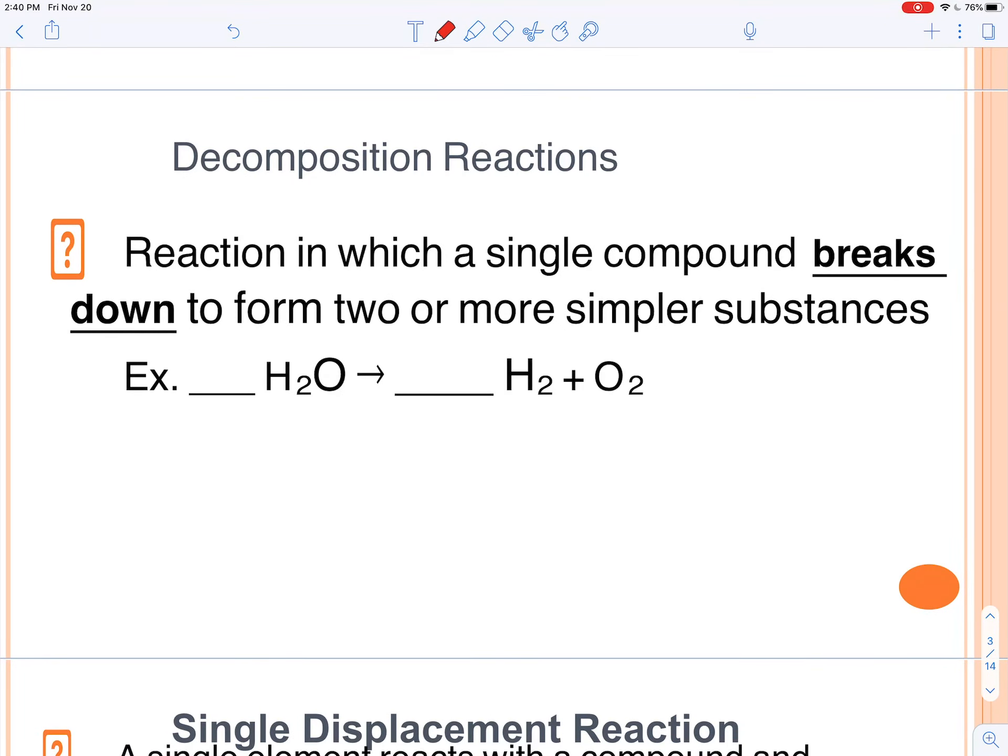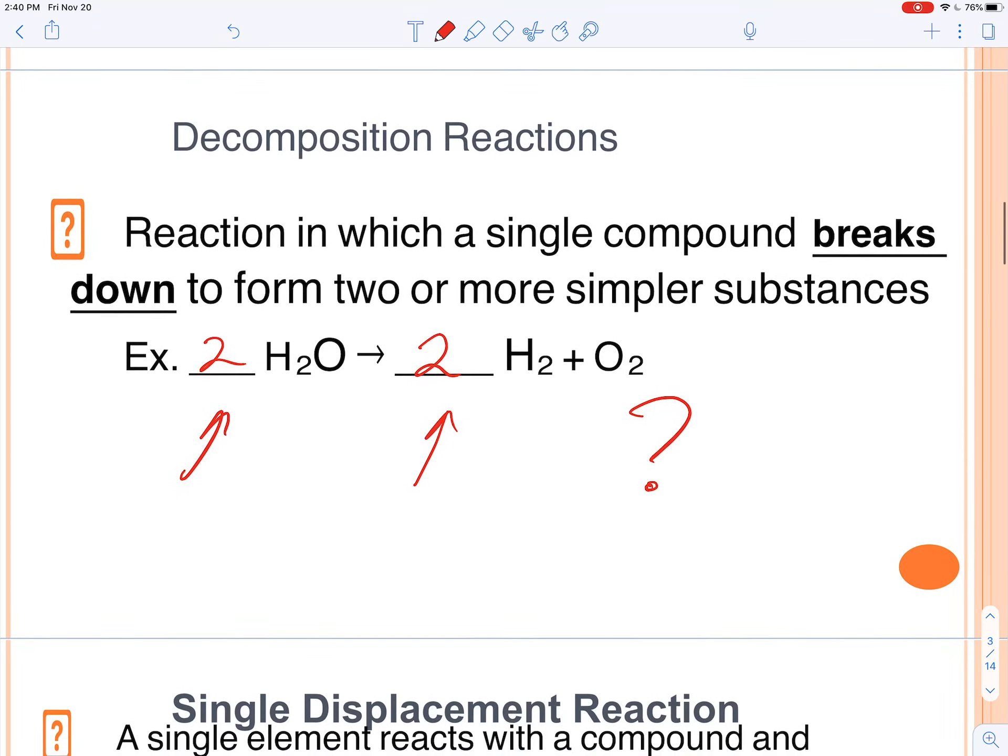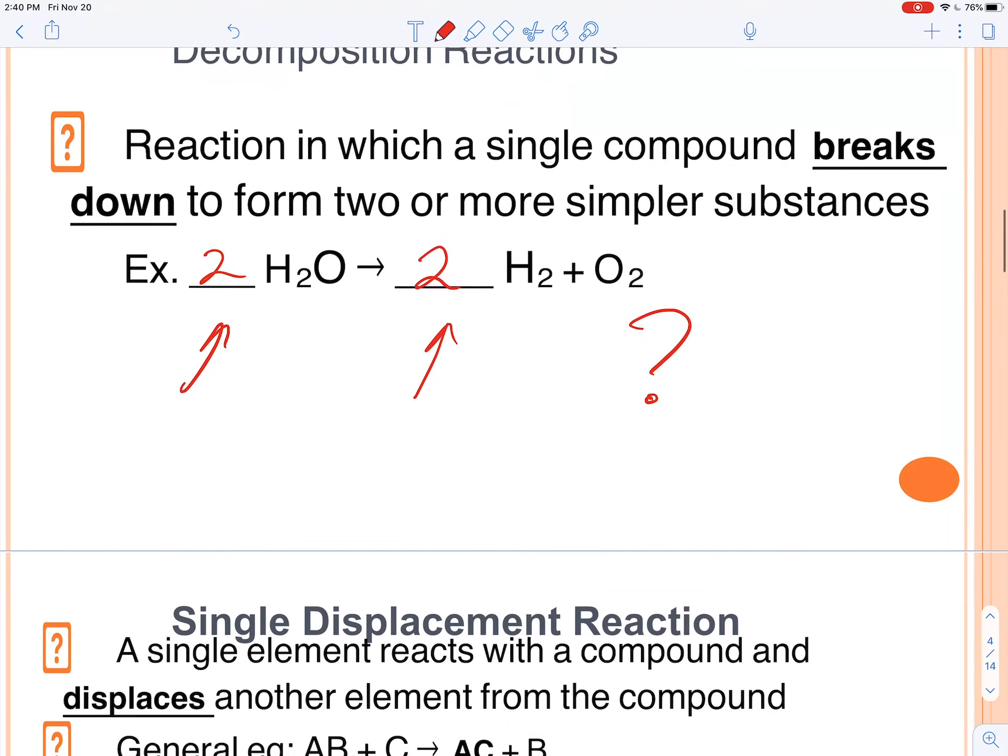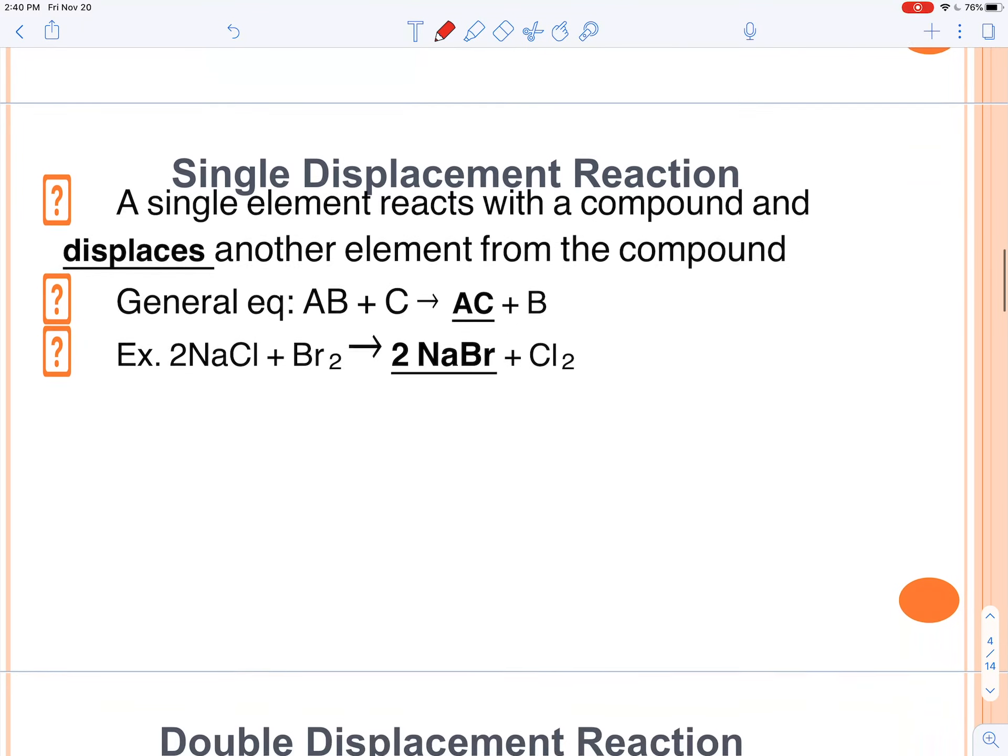Decomposition, a compound breaks down into simpler substances. So what numbers do you think go here and here? Two and two, two oxygens and then four hydrogens total on both sides.